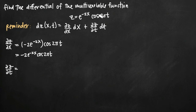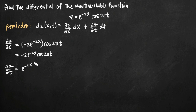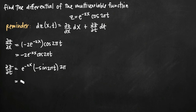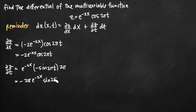The derivative of cosine is negative sine, so we leave e to the negative 2x as a coefficient and write negative sine of 2 pi t, leaving the inside function completely untouched. Then we multiply by the derivative of the inside function. The derivative of 2 pi t is just 2 pi. When we simplify, we bring the negative and 2 pi out in front to get negative 2 pi e to the negative 2x times sine of 2 pi t.